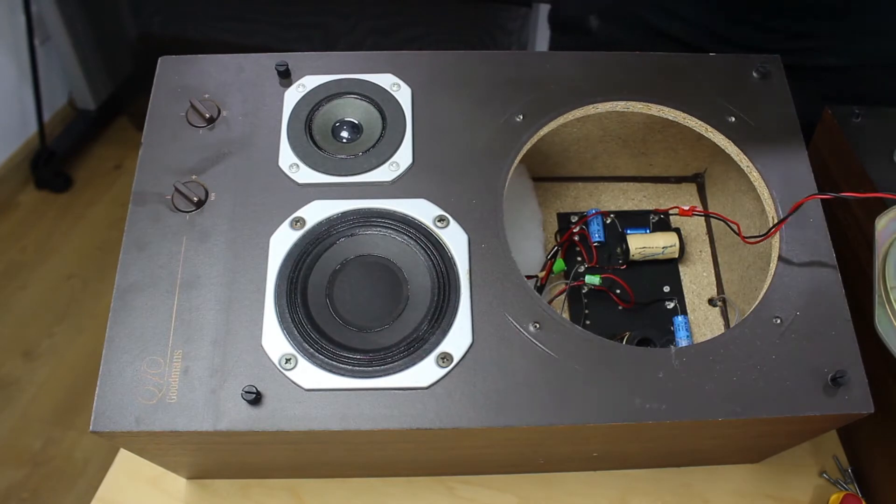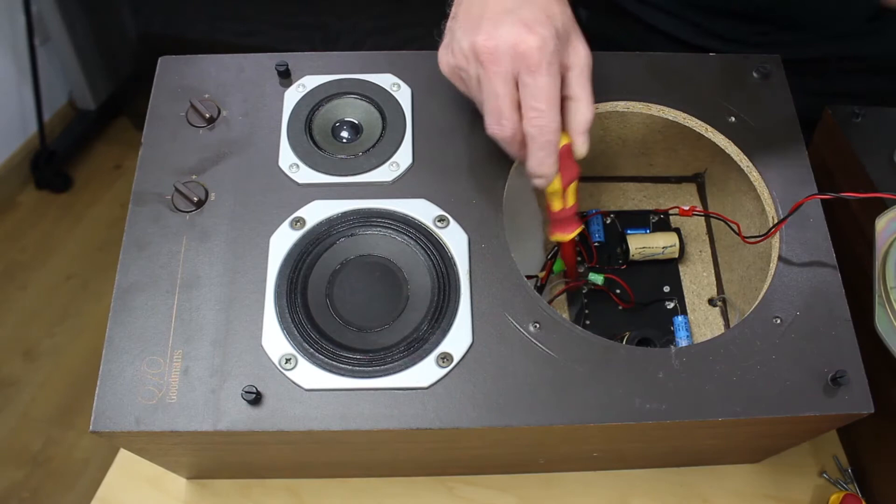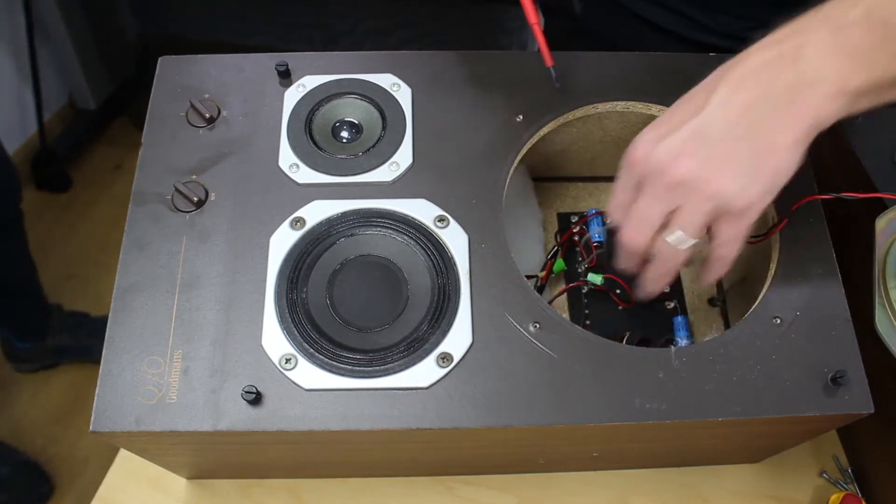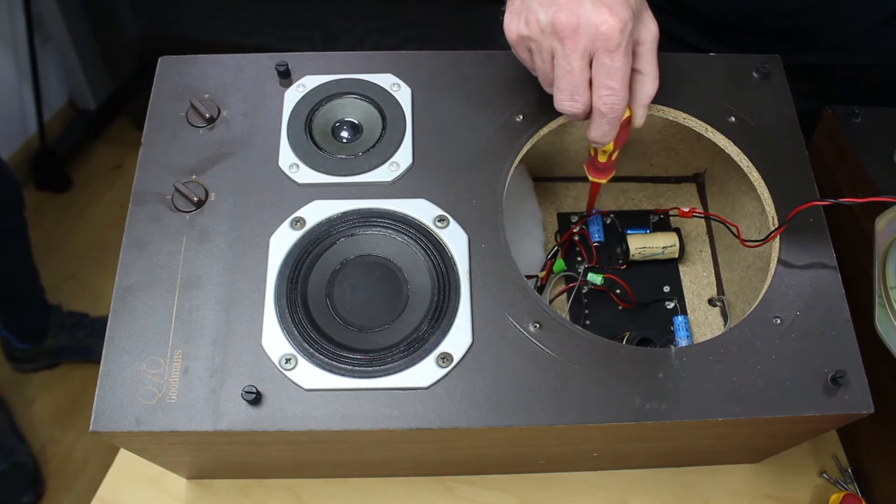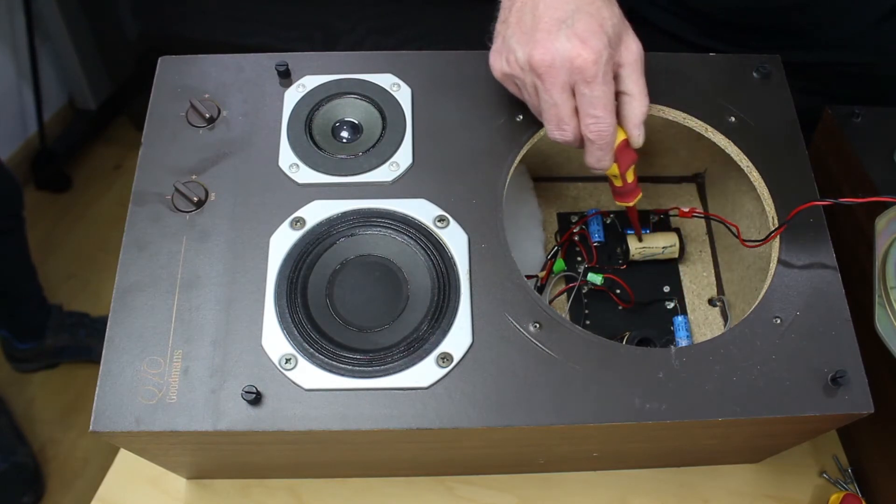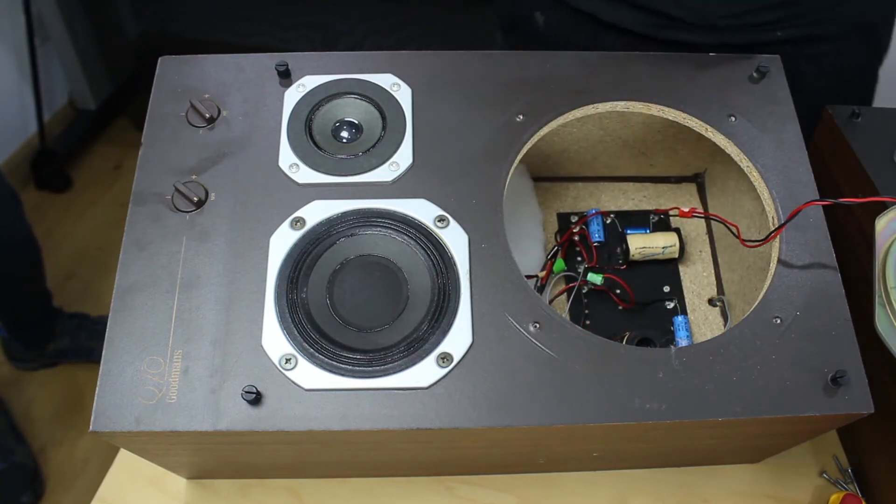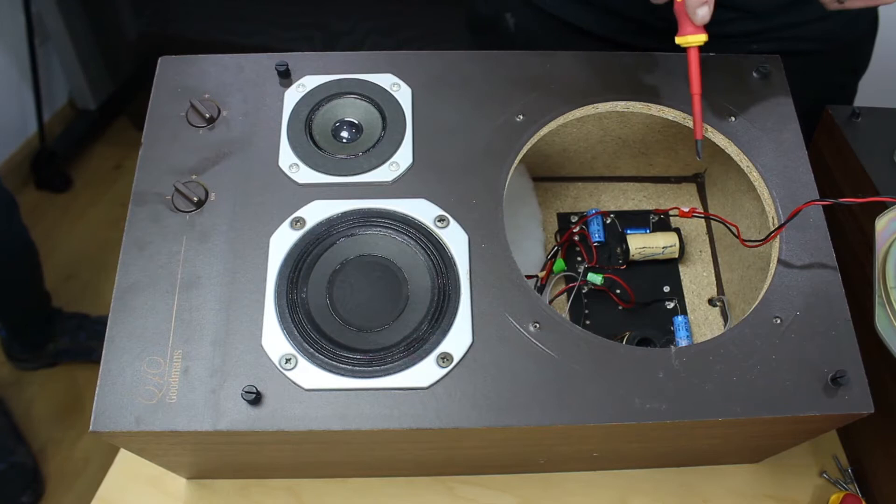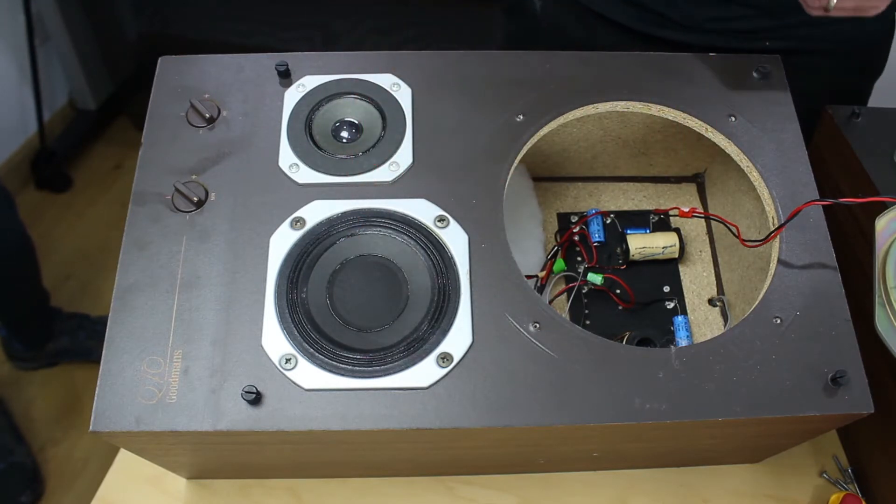And we've got the cables coming out here that go out to the amplifier. And then we've got the capacitor across here, here and here. And we've got a big coil here and here. So this must be the tuning network. So it allows certain frequencies to pass to these different speakers depending on the frequency range.